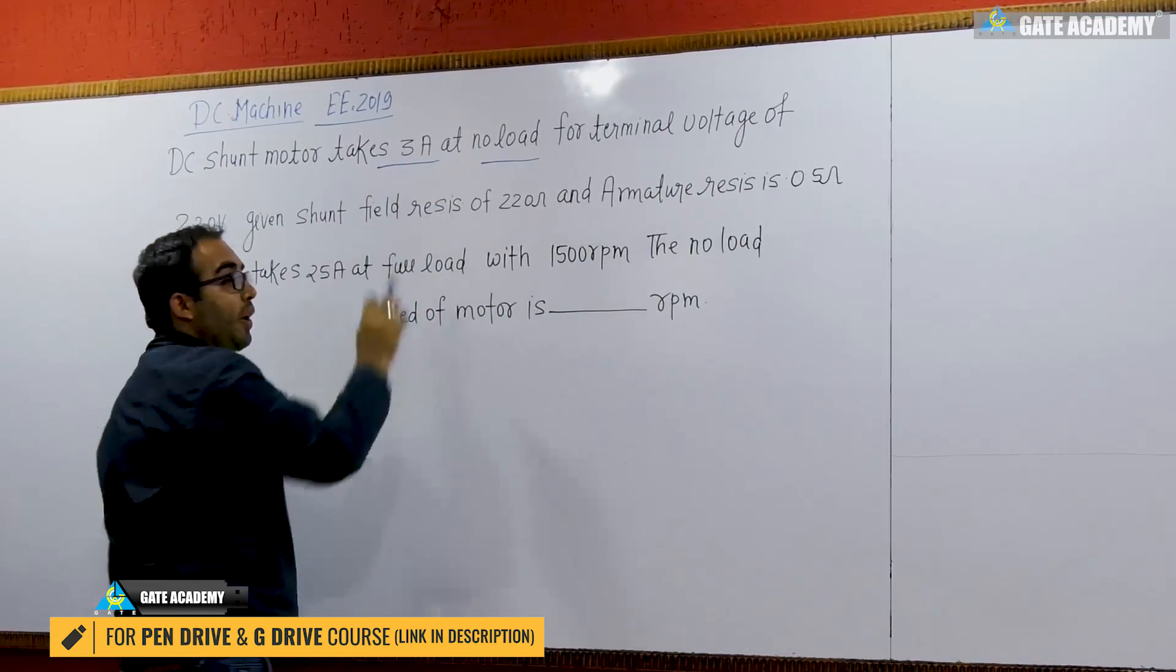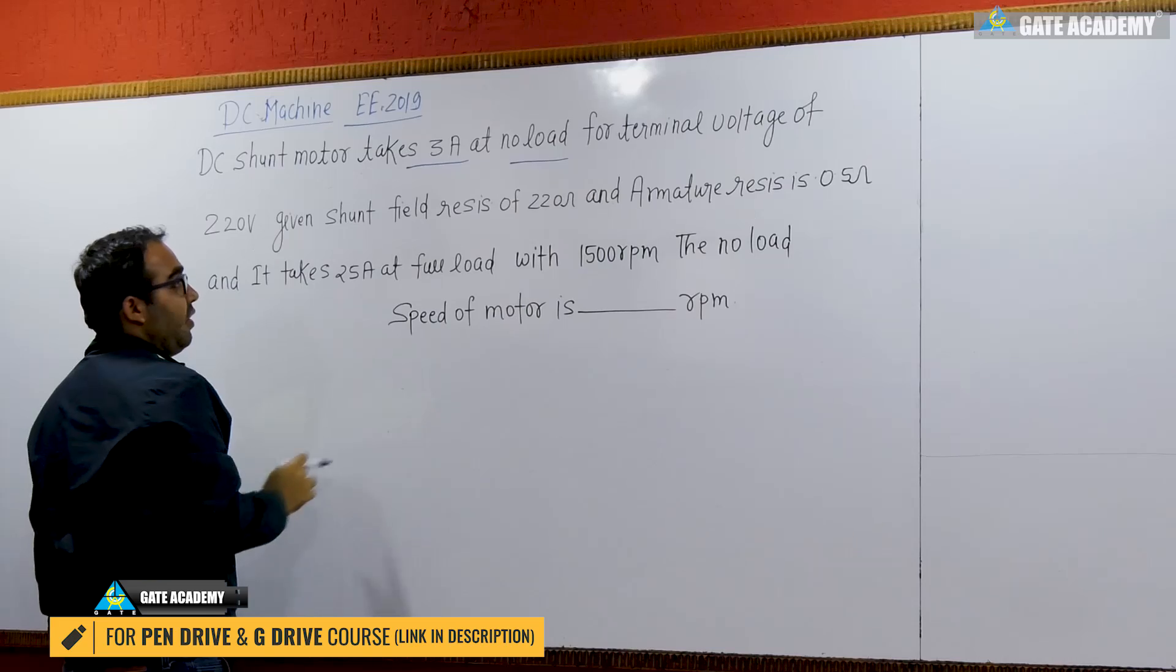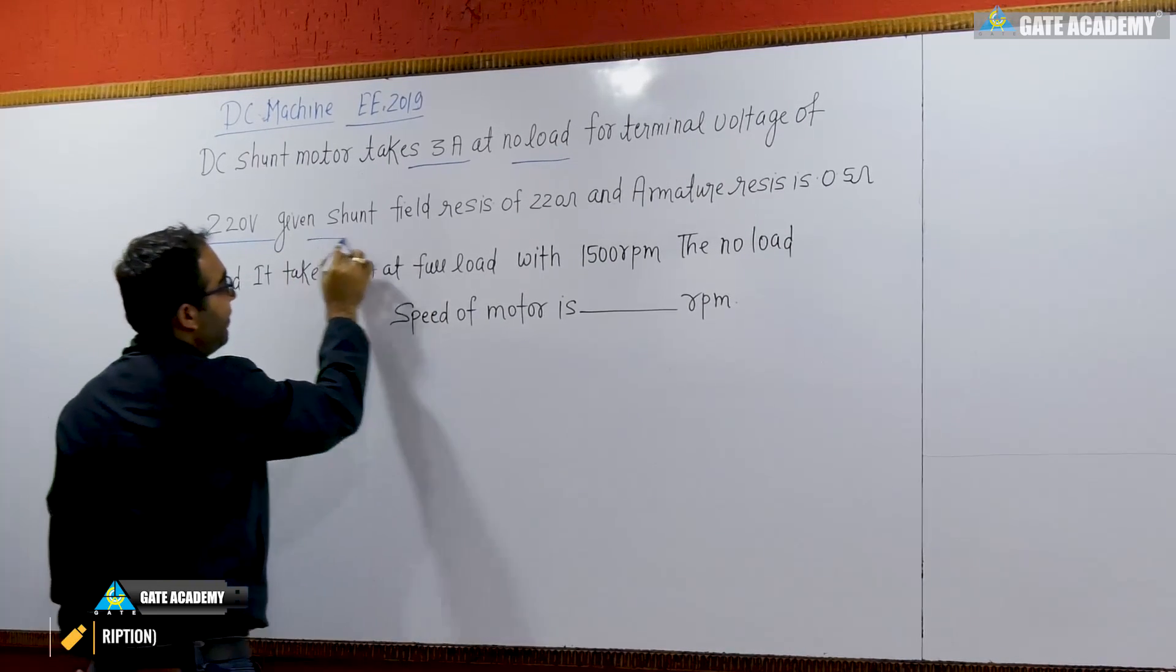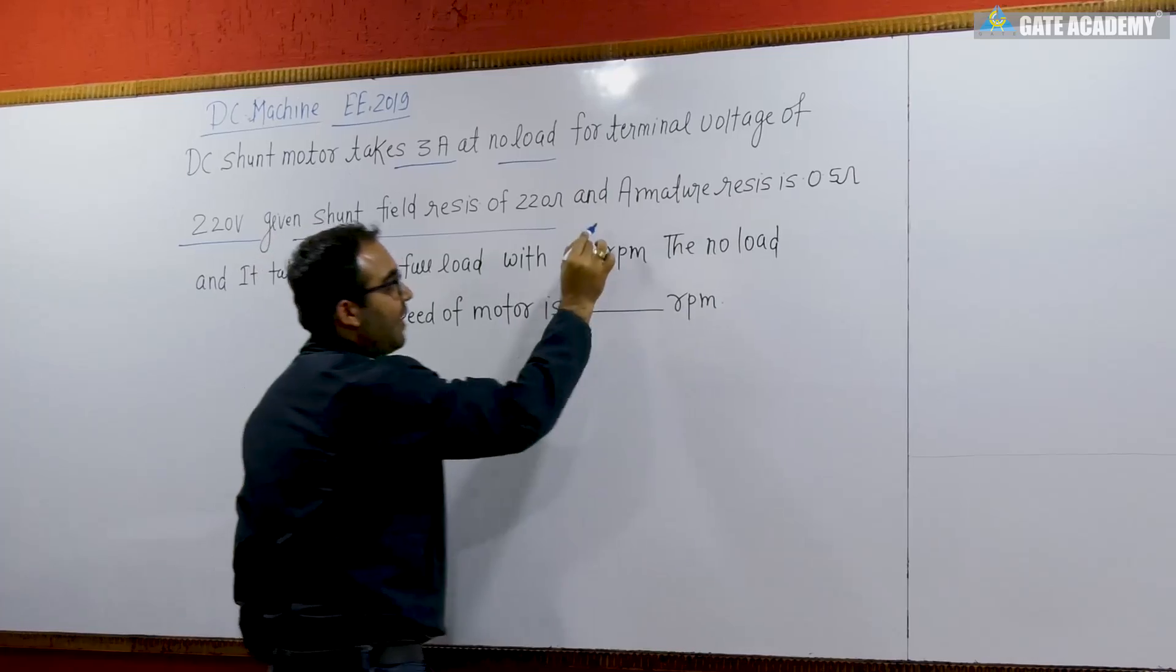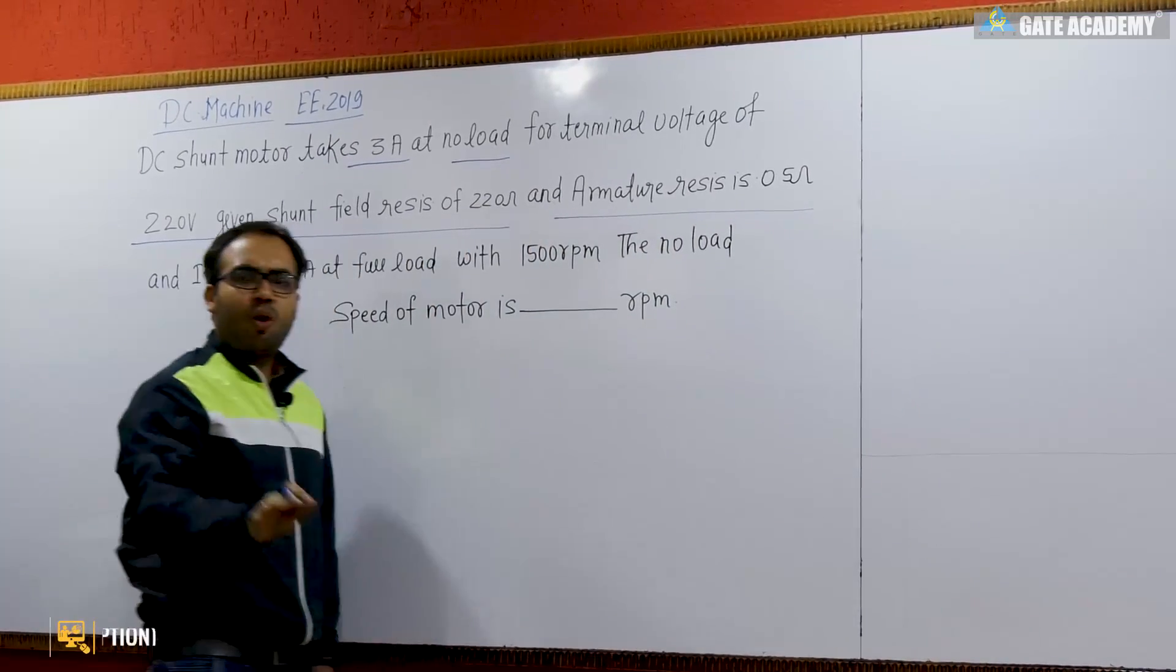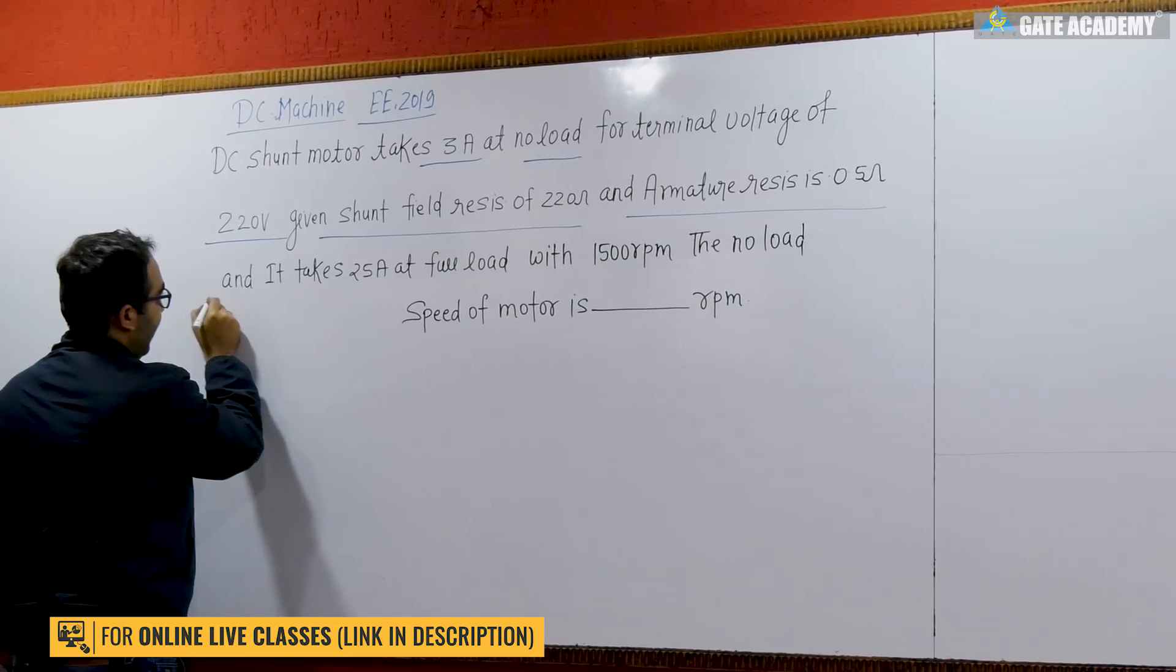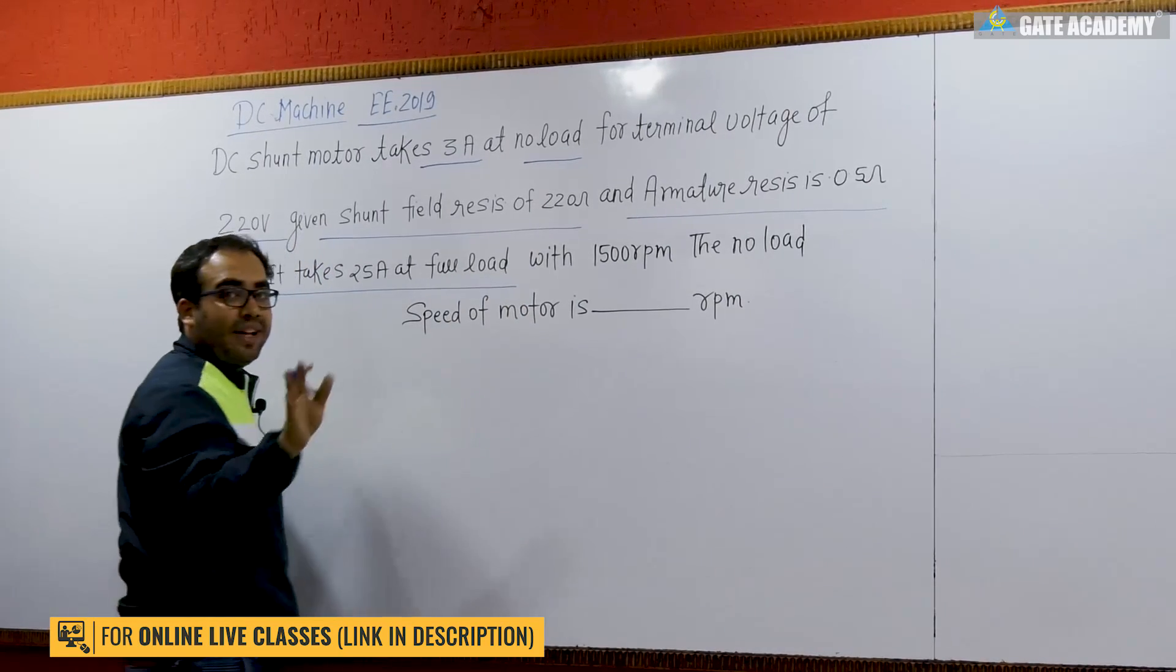The terminal voltage of the DC shunt motor is 220 volt. The shunt field resistance is 220 ohm, armature resistance is 0.5 ohm. So all the data are given, nothing is skipped. It takes 25 ampere at full load. So two cases are given: no load and full load.